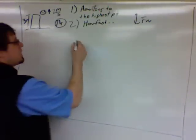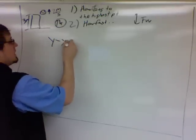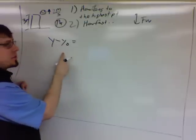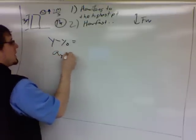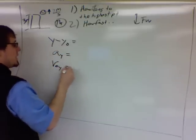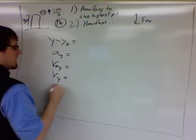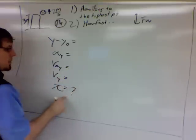So let's go ahead and write our five variables. So we're going to have y minus y naught. And if you put x's here on the first test, that's okay. Acceleration in the y, initial velocity in the y, final velocity in the y, and time, which is what we're looking for.